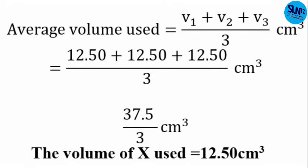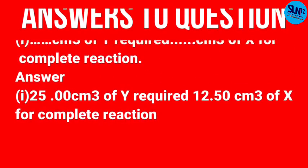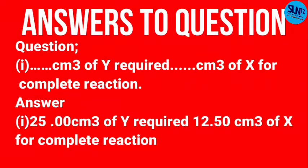The average volume used is calculated as: volume one plus volume two plus volume three divided by three. That is 12.5 plus 10.5 plus 10.5 divided by three. The average volume of X used is 12.5 cm³. The volume of Y required to neutralize the volume of X for complete reaction is 25 mL.